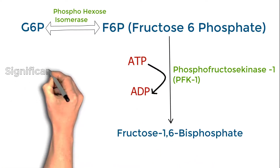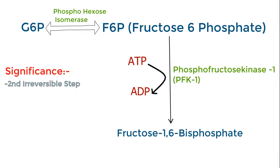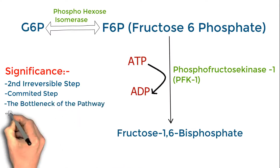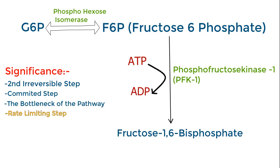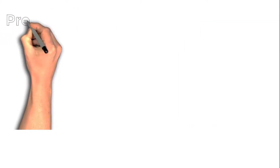Step 3 significance: it is the second irreversible step, the committed step, also known as the bottleneck of the pathway, and the rate-limiting step. If there is already enough ATP in the body, PFK-1 will not act and will not convert fructose 6-phosphate into fructose 1,6-bisphosphate. That is why it is the rate-limiting step — it prevents excess ATP generation when adequate energy is already present.